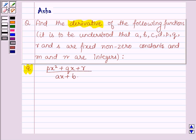The ninth one is Px squared plus Qx plus R upon Ax plus B. So let's start with the solution and let us denote the given function by f(x). So f(x) is equal to Px squared plus Qx plus R upon Ax plus B.